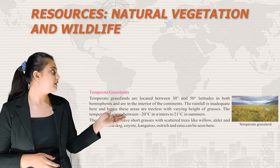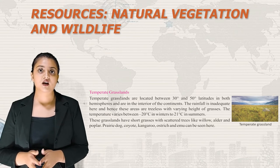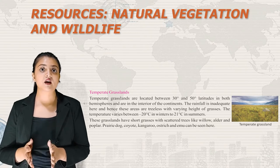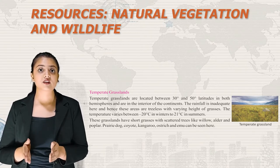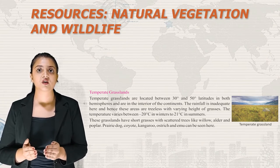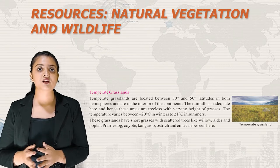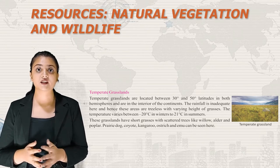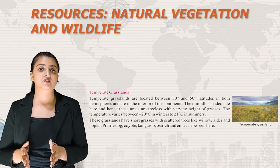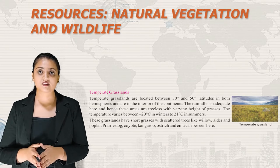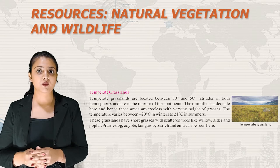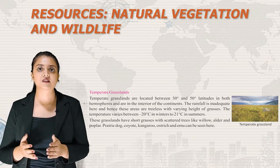Temperate grasslands are located between 30 and 50 degree latitudes in both hemispheres in the interior of continents. Rainfall is inadequate, leaving these areas treeless with varying heights of grasses. Temperature varies from minus 20°C in winters to 21°C in summers. These grasslands have short grasses with scattered trees like willow, alder and poplar. Prairie dog, coyote, kangaroo, ostrich and emu can be seen here.